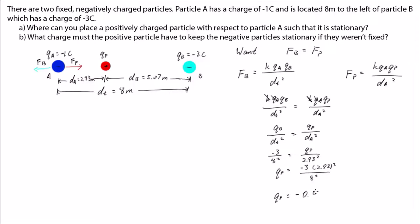We get a negative number, which is telling us that the charge the positive particle must have is negative. So it is in fact a negative particle. That's weird.